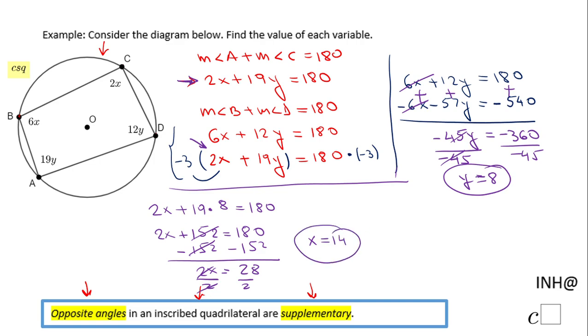So we did find the value of each variable: X is 14 and Y is 8. If you enjoyed this video, don't forget to click the like button and come back to C Squared for more help. Thank you.